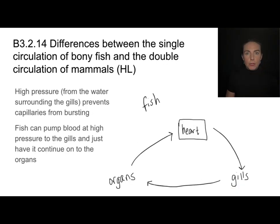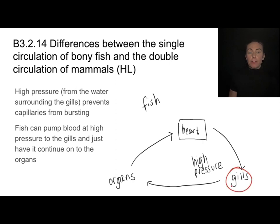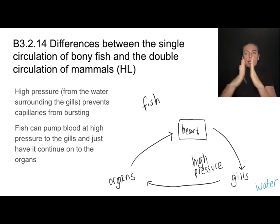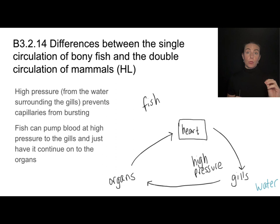Fish don't need this double circulatory loop. They can send blood from their heart to their gills at the same high pressure required to get blood from the gills to the rest of the organs, because instead of air outside the gills, there's water. That water creates enough counter-pressure so the blood coming through the gills won't overwhelm or burst those vessels. So fish don't need that double loop — the high pressure needed to get blood from gills to organs is an acceptable pressure at the gills too.